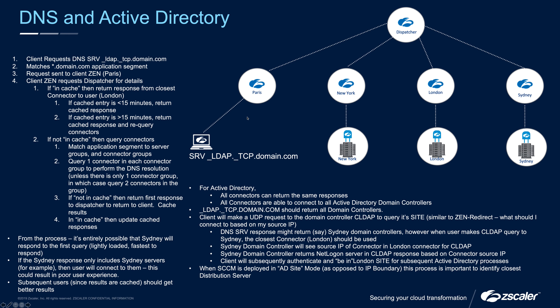The user makes a TCP connection to the domain controllers, which enumerates and takes the best path. If the response is already in cache and less than 15 minutes old, the cached response is returned from the closest connector to the user. So on the first request, Sydney might respond fastest giving a suboptimal result; on subsequent requests, the dispatcher knows London is closest to the Paris-connected user and returns the optimal response.